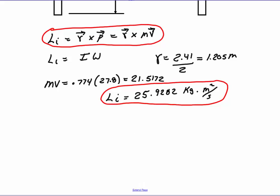Now we know by the conservation of angular momentum if a torque is not being applied, then L initial will equal L final. So we know our final angular momentum will also equal to the same value, 25.9282.